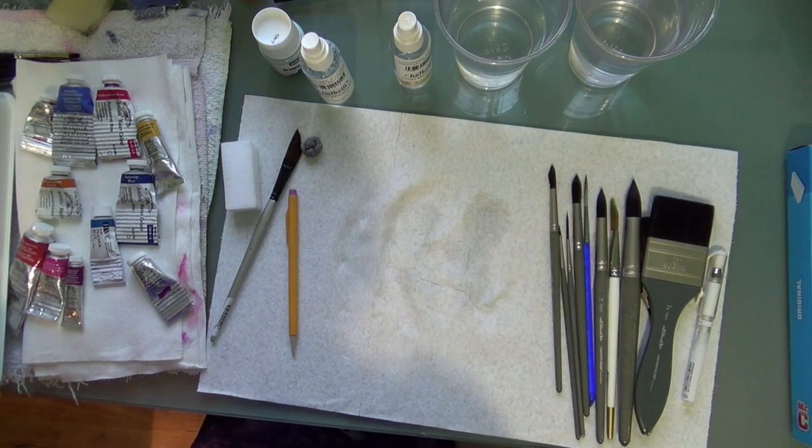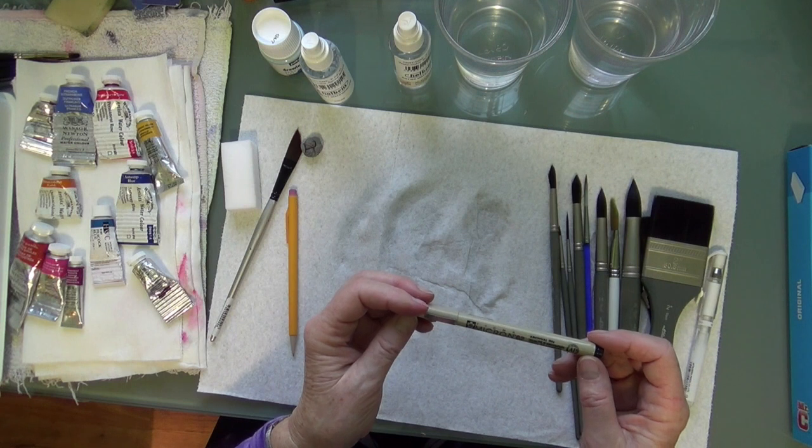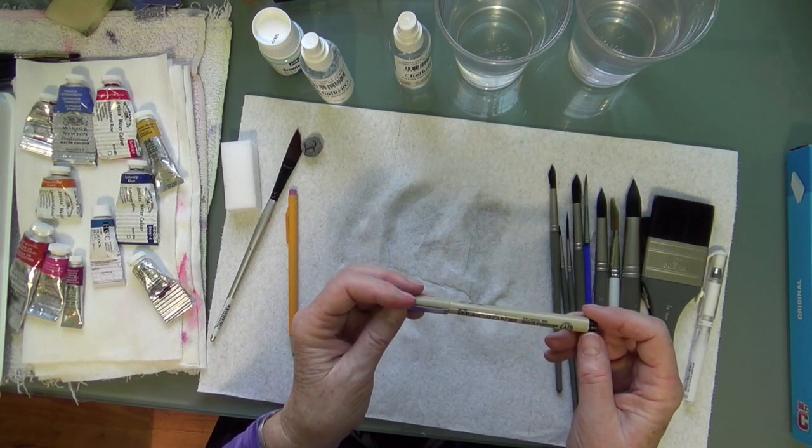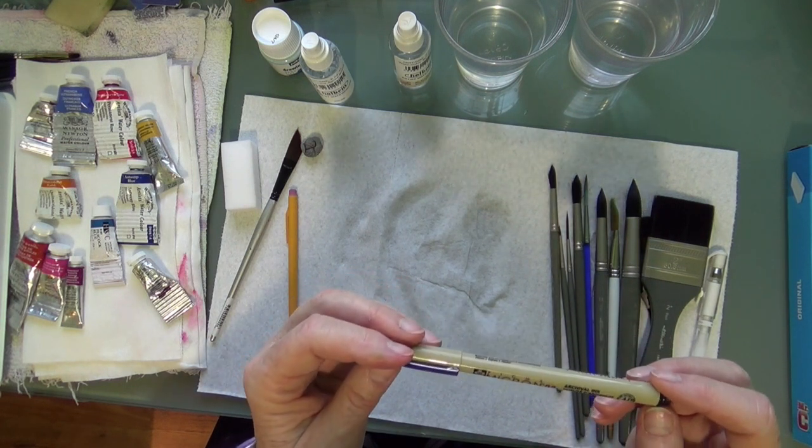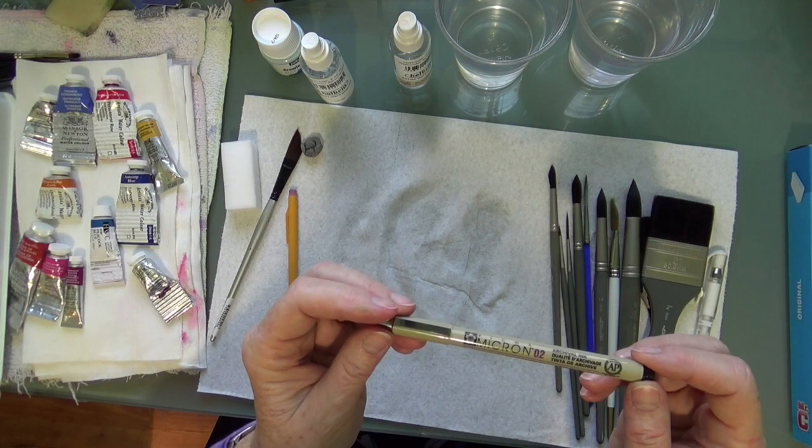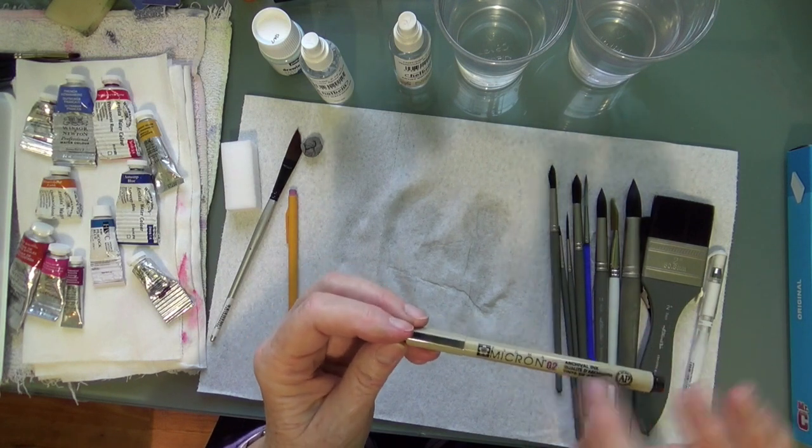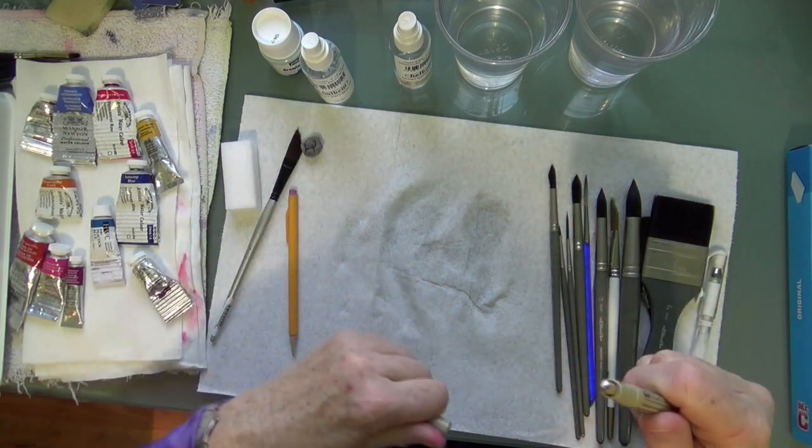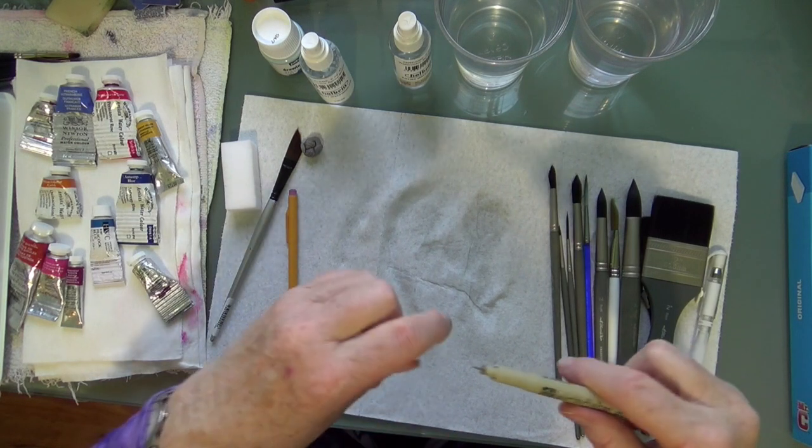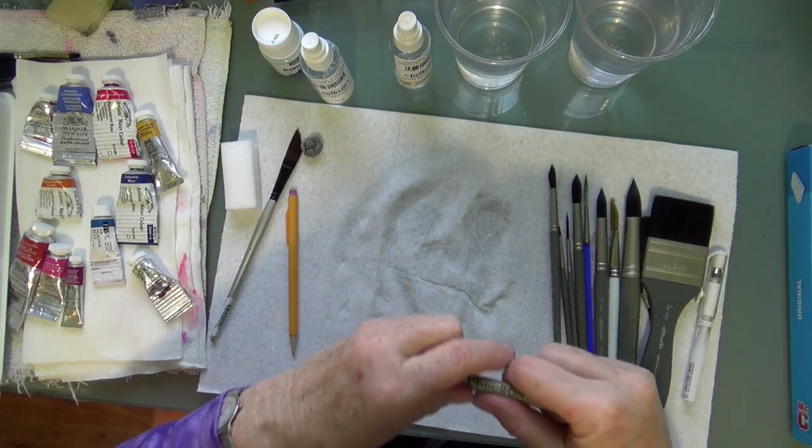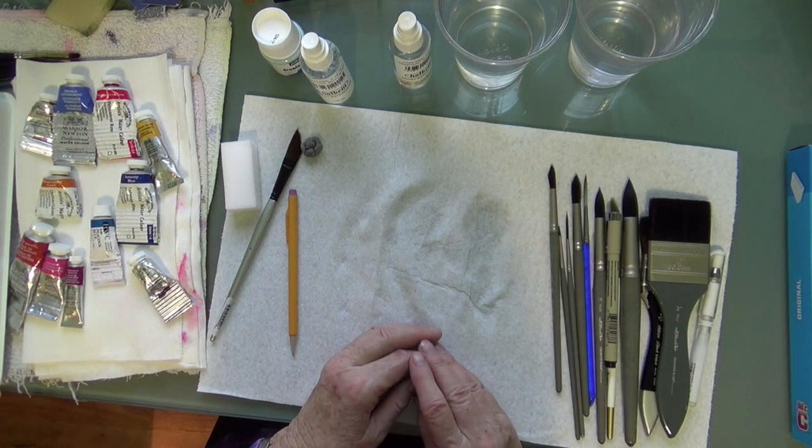And then sometimes I will combine pen and ink with my watercolors. And I'm a fan of the Pigma Micron pens. They come in a lot of different tip thicknesses and come really, really fine. Like this one here, 0-2. So sometimes I like to do pen and ink work on my watercolors.